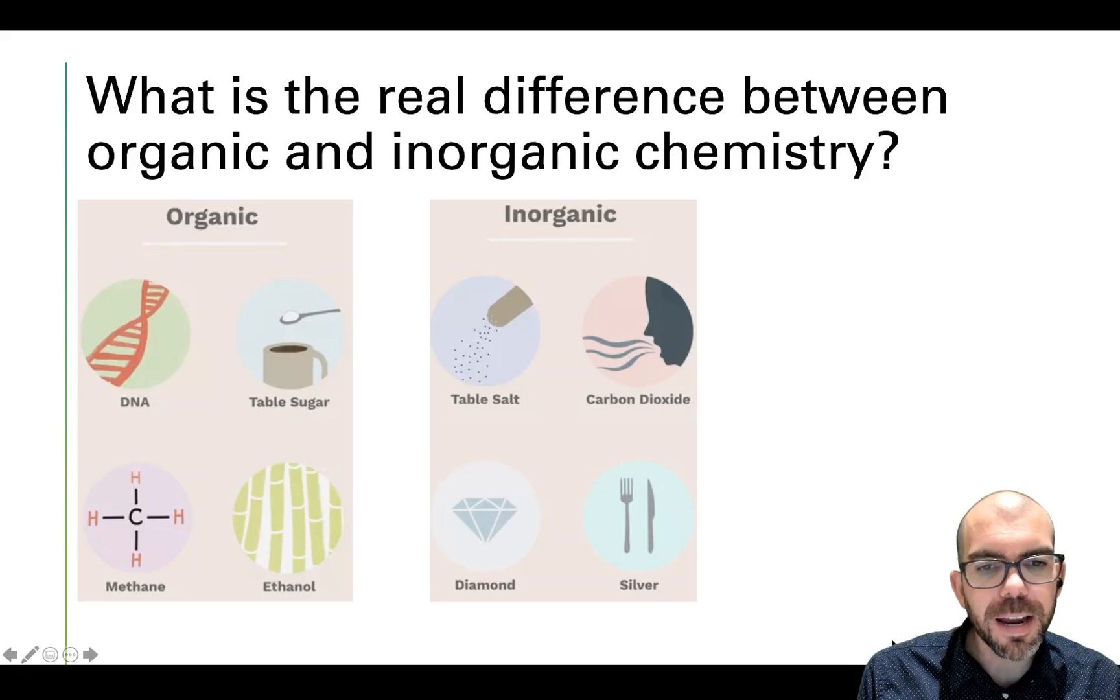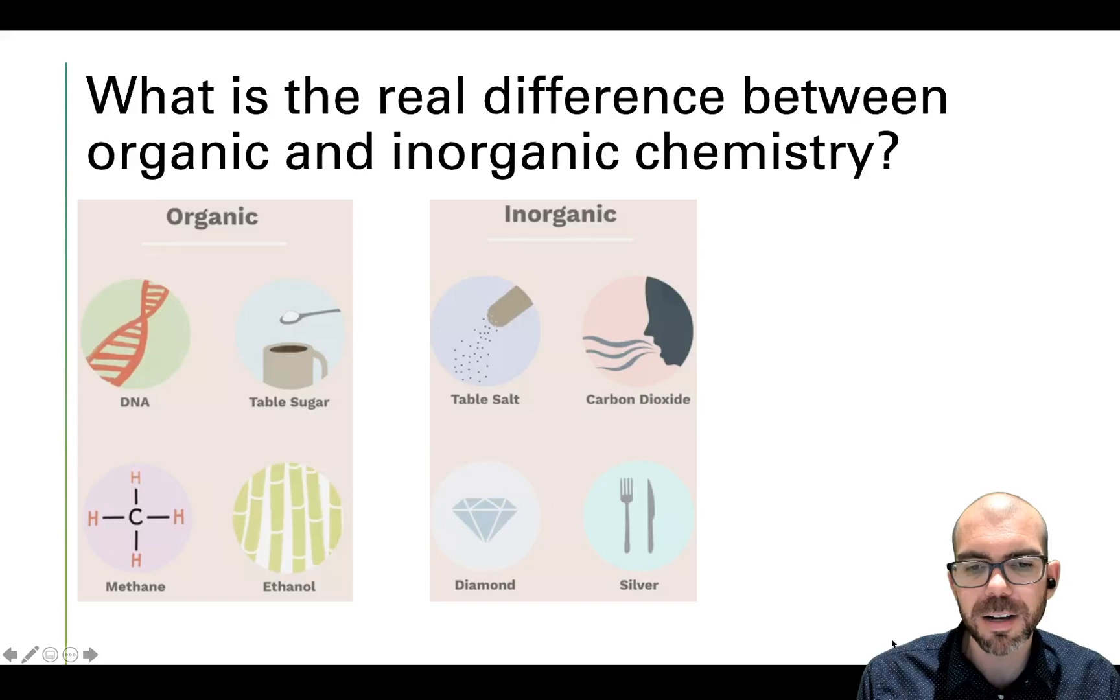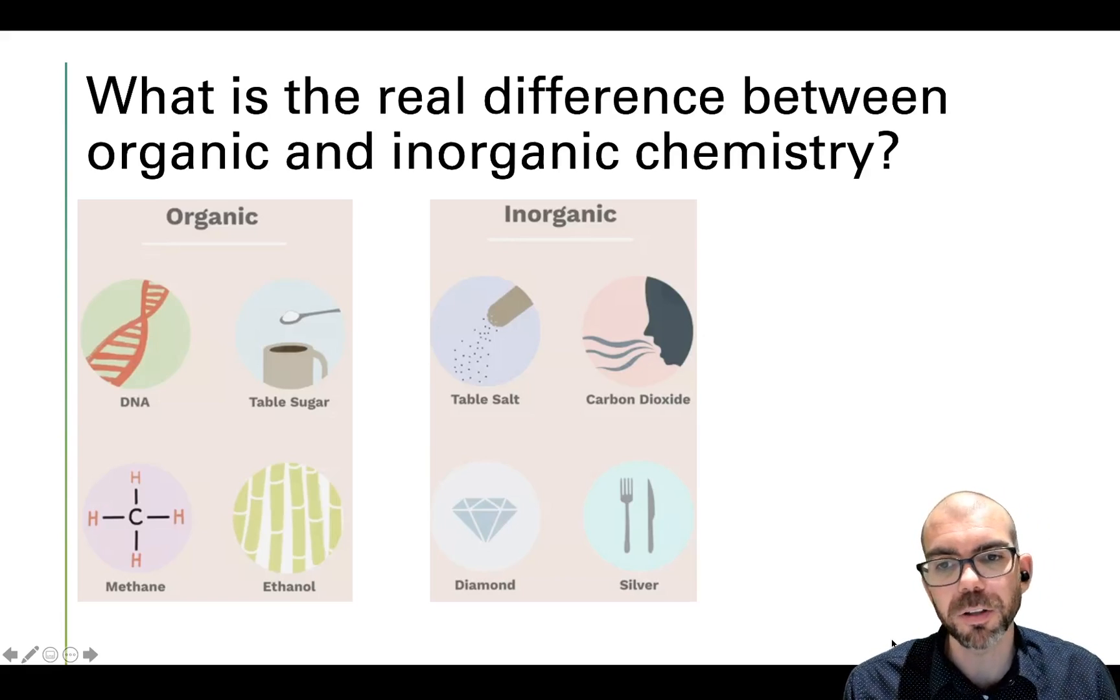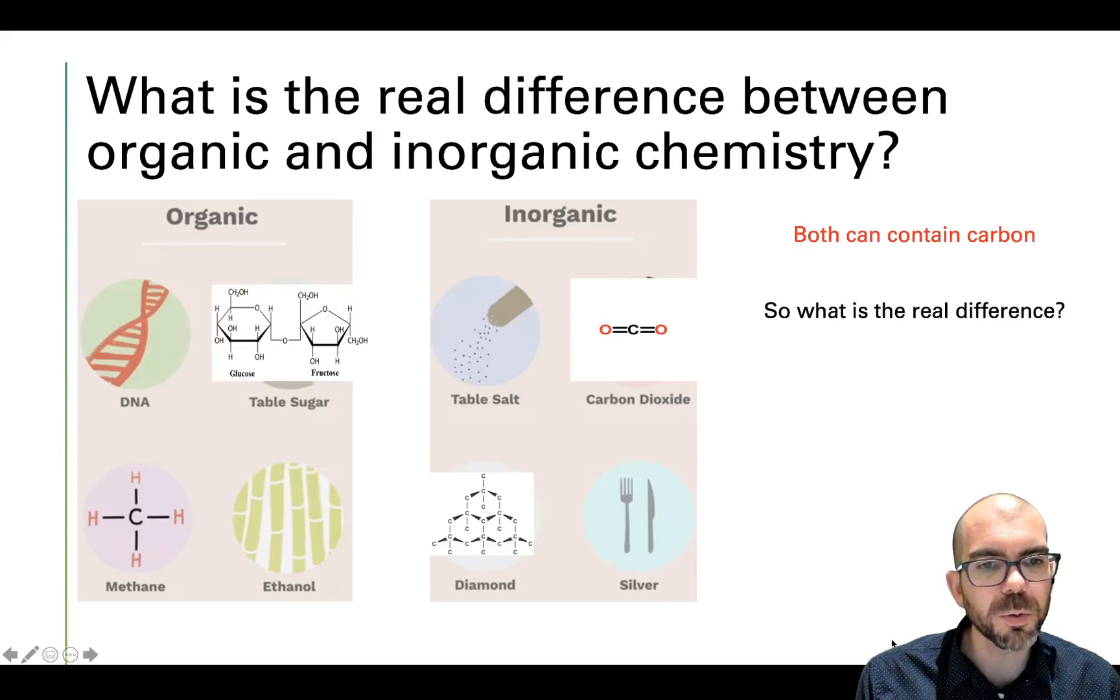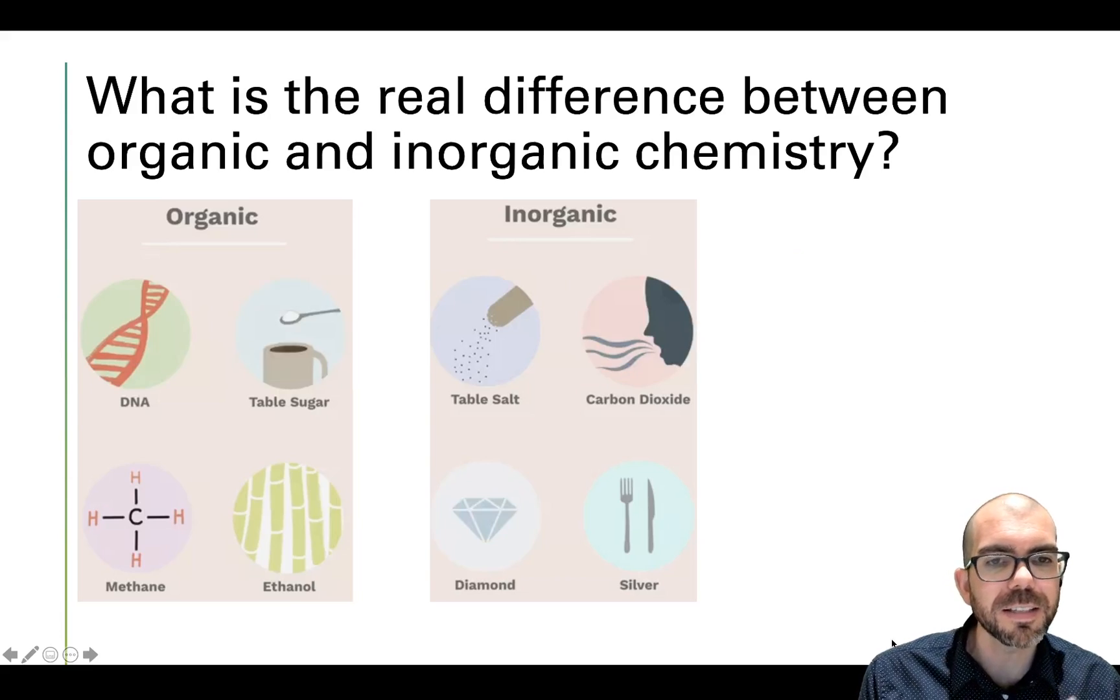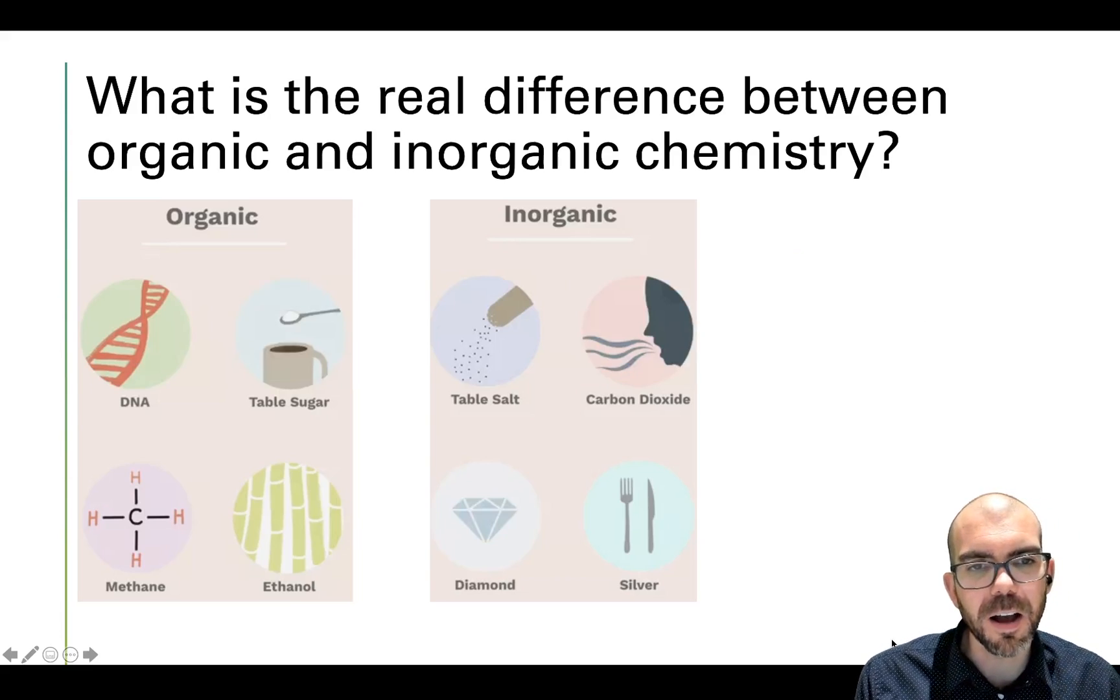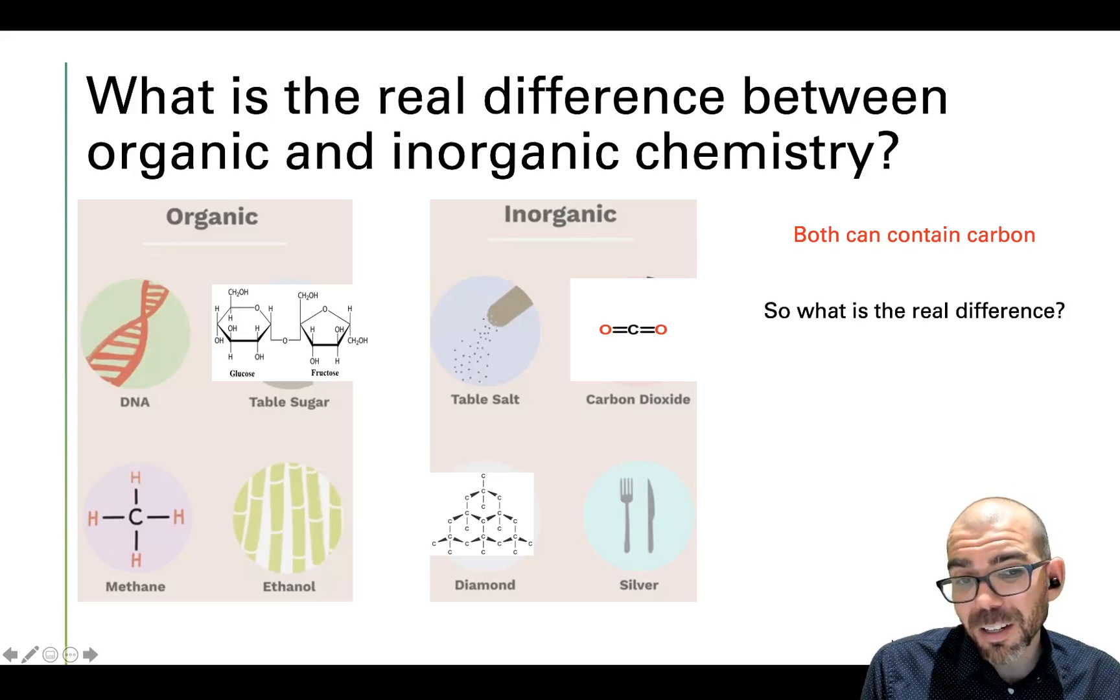Here's what I mean by this. Inorganic chemistry is the realm of general chemistry - things like table salt, carbon dioxide, diamond, and silver, things we consider not living. Then there are compounds that we put into the category of living molecules being organic such as DNA, table sugar, methane, and ethanol. What is the real distinction between these two? When can we start saying that something is living and something is not? Both contain carbon.